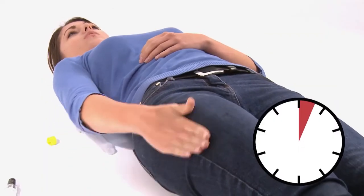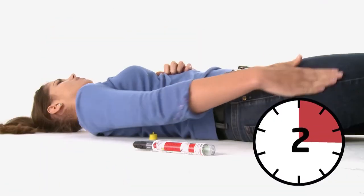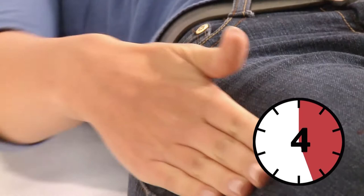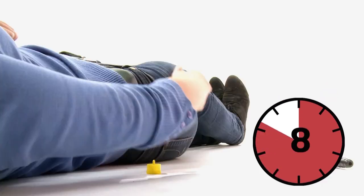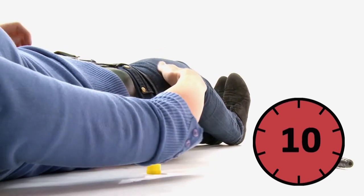Jext has been designed to inject through the clothes, avoiding zips and buttons. Massage the area for 10 seconds. The needle shield will automatically cover the needle when the Jext is removed from the thigh.